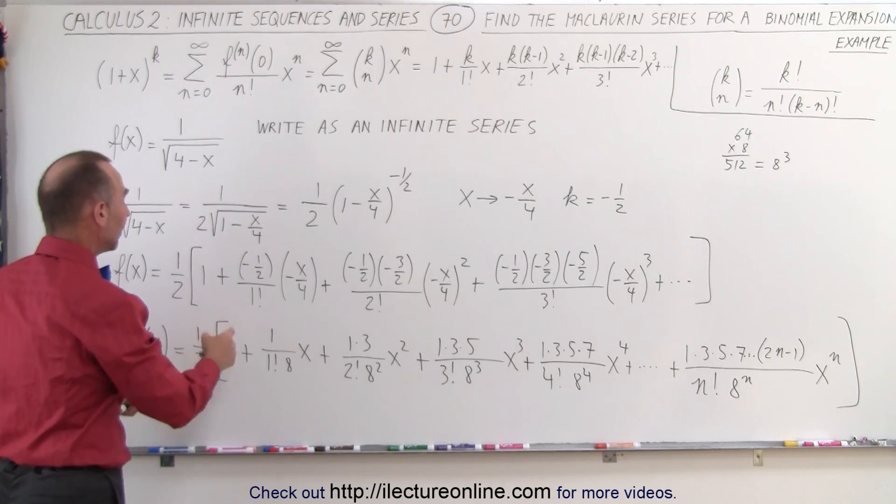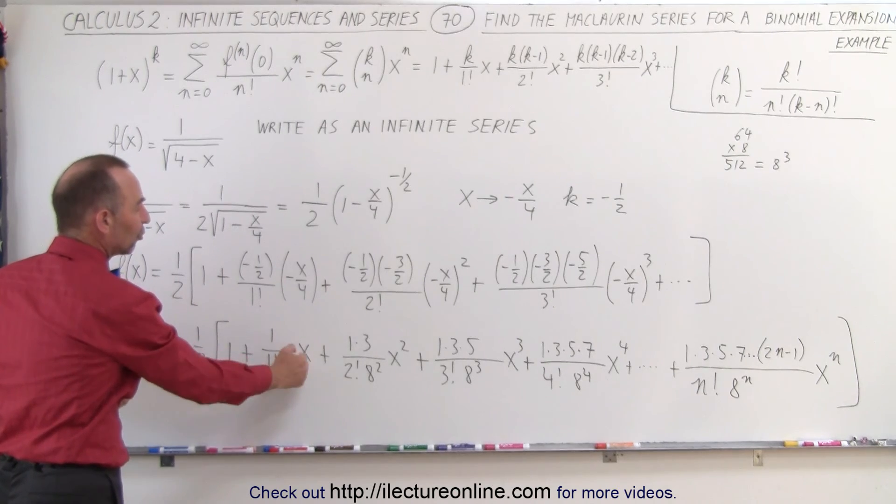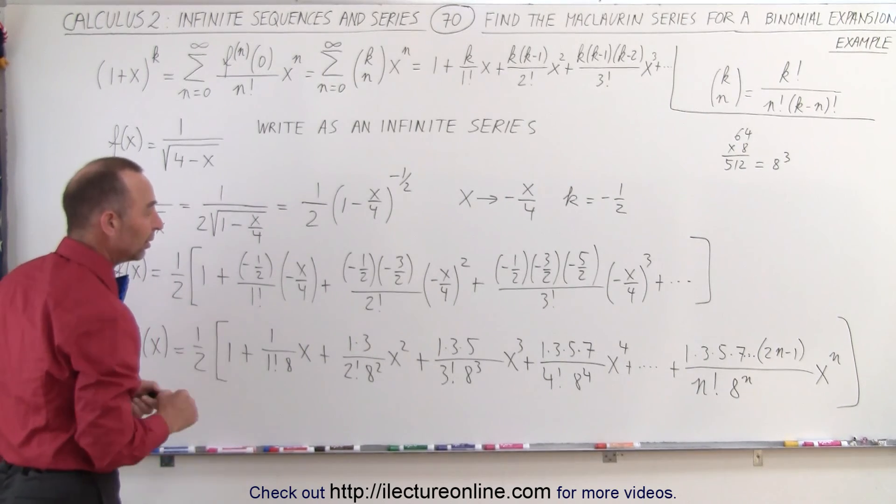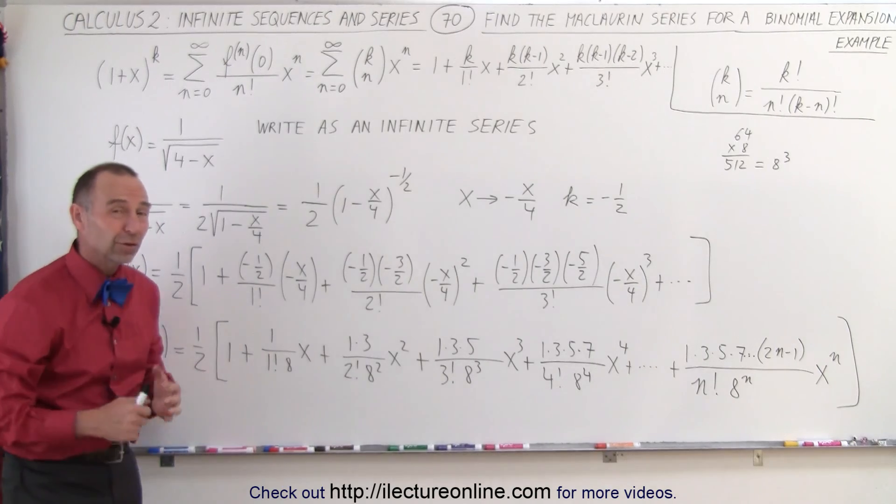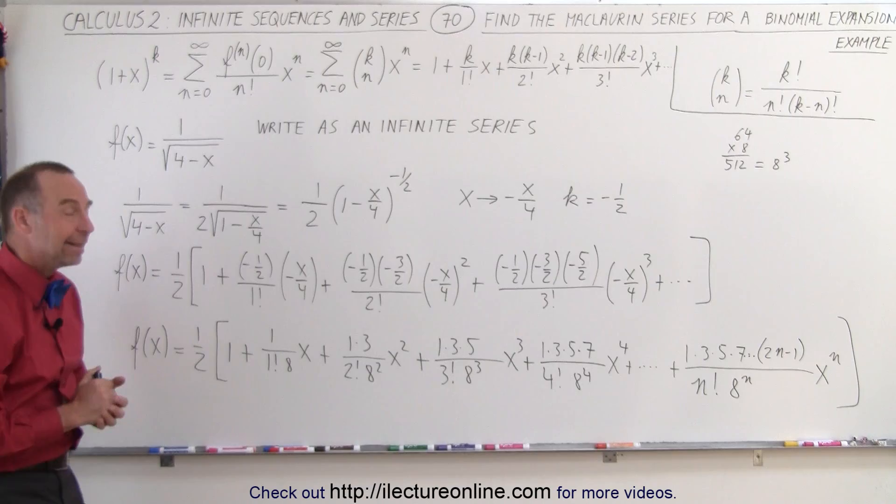Now notice that x will have a limiting value and you probably won't have x smaller than 1. So the radius of convergence looks like it's going to be equal to 1 here. And that's how it's done.